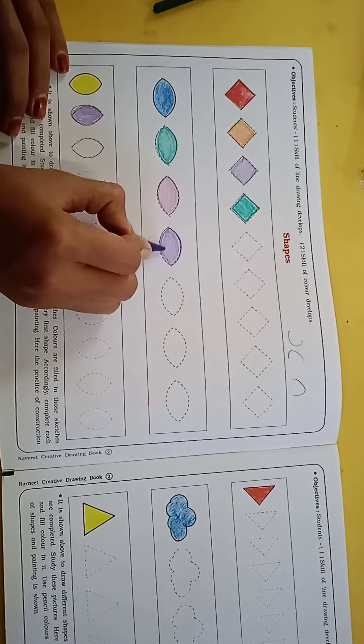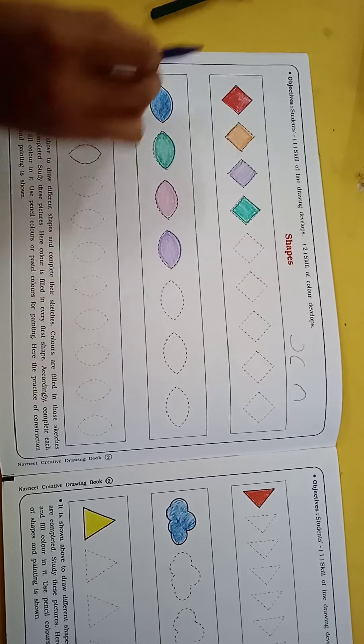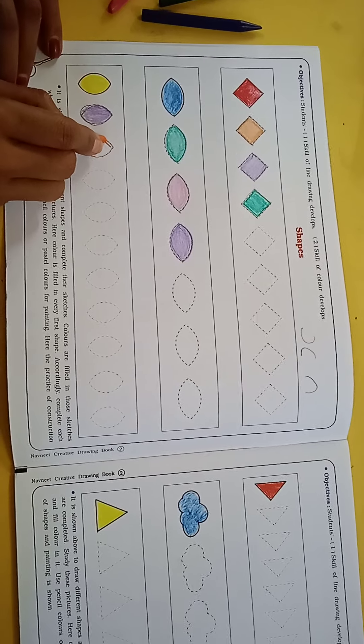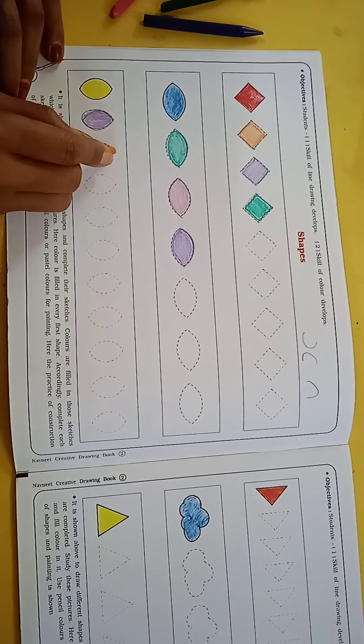When you fill the color in the same way, you will keep the color in the same way. Now we need to fill this color. First, we will make the opposite C on the border.